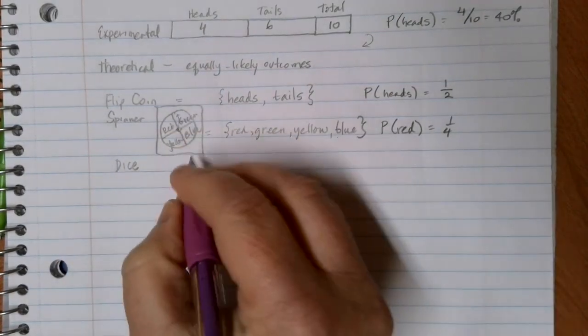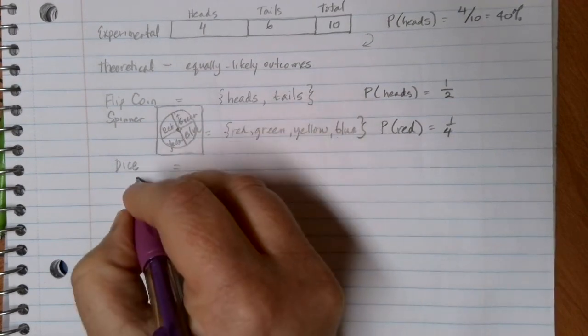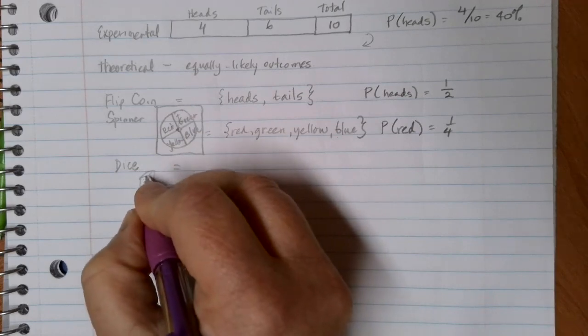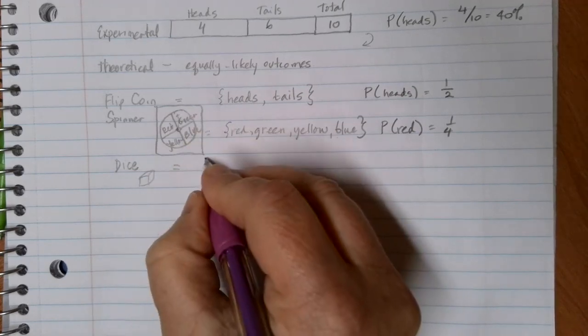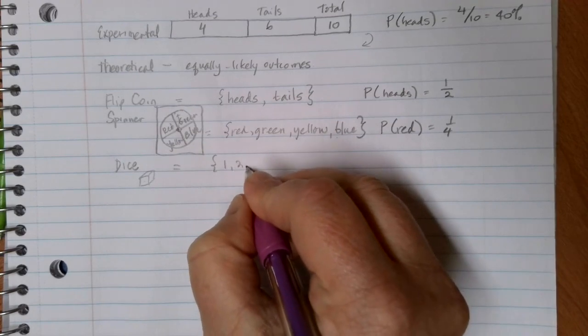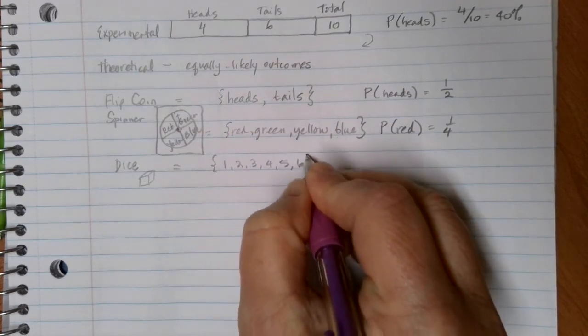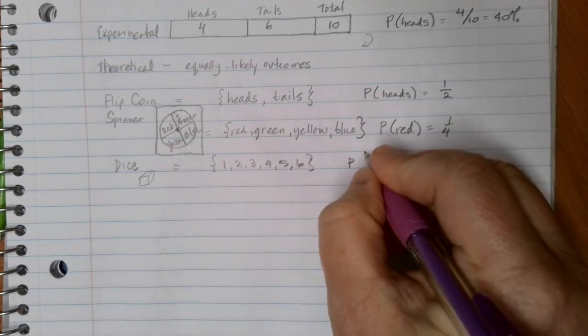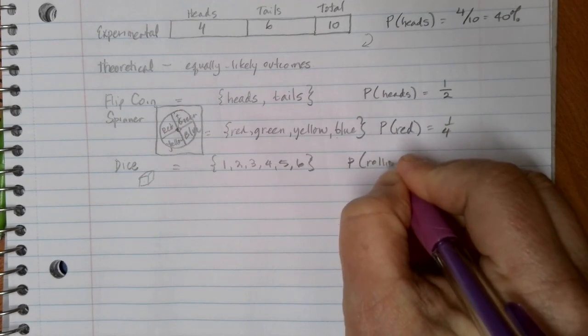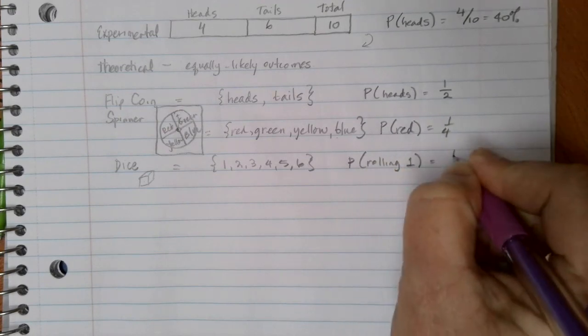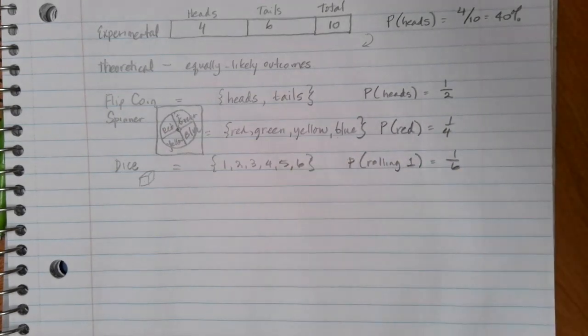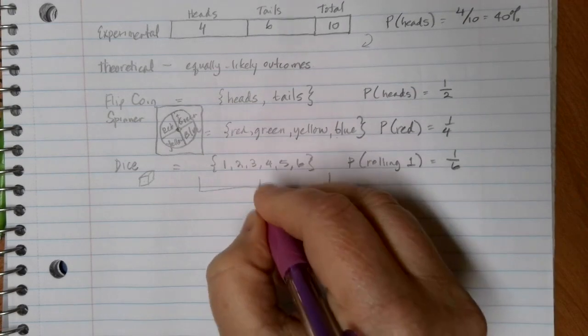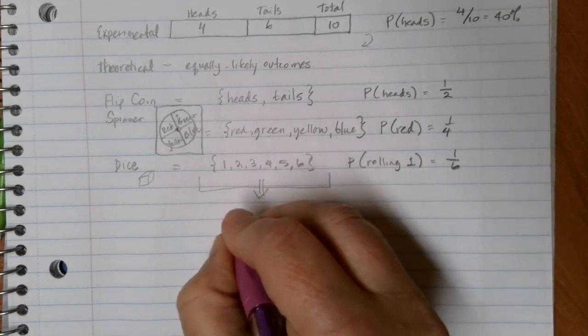A last common one that we see is a standard dice. And when we're talking about dice, we're just usually talking about the six-sided dice, unless it specifies otherwise in the problem. And so our options of things that we could get would be a one, a two, a three, a four, a five, or a six. And with a fair dice, any of those options is equally likely. So the probability, let's say, of rolling a one is one out of those six total options in our space. These lists here of all the possible likely outcomes is called a sample space.